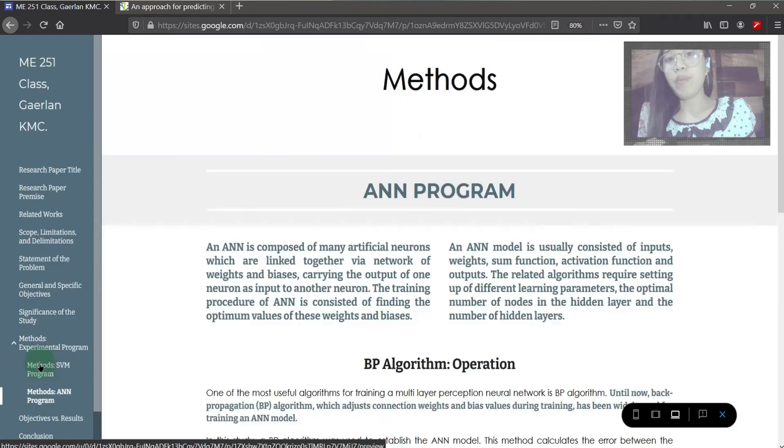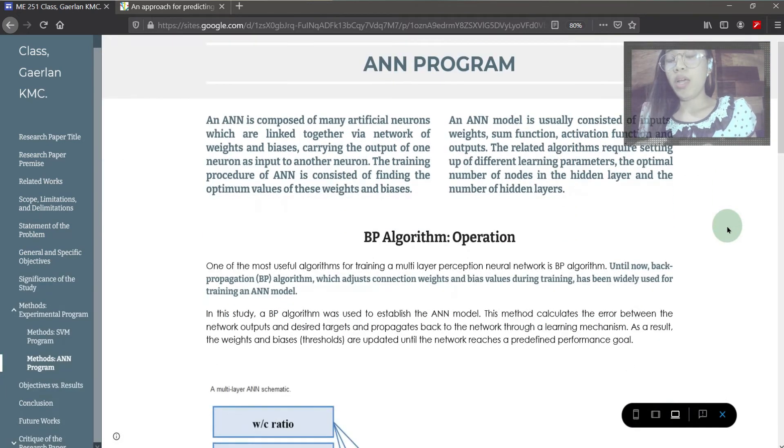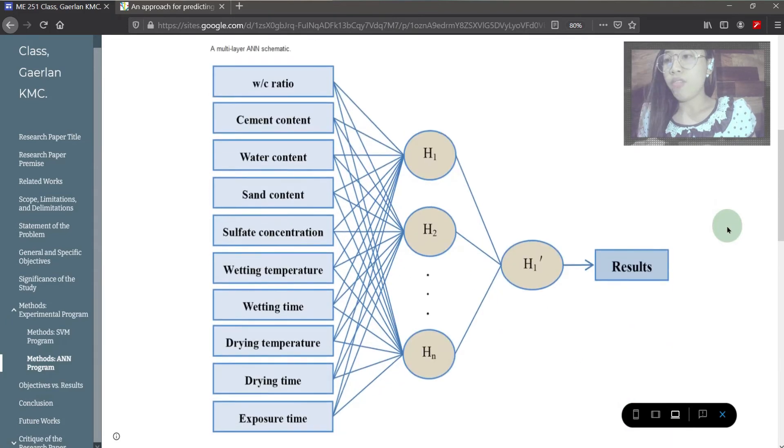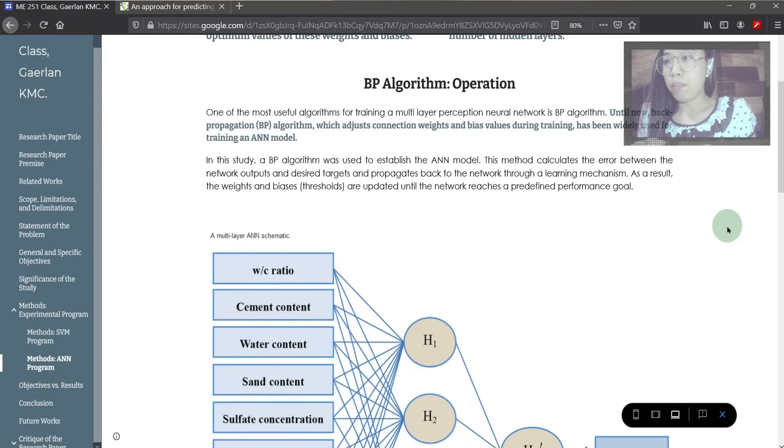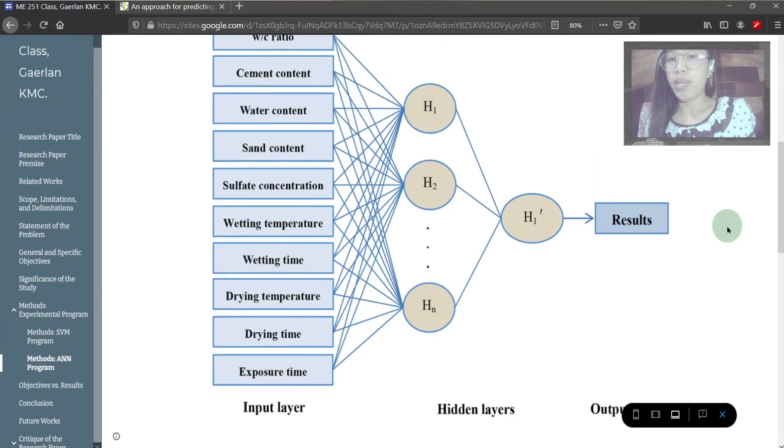Comparing SVM approach to ANN or artificial neural network, ANN composed of many artificial neurons which are linked together by a network of weights and biases, carrying the output of one neuron as input to another neuron. This usually consisted of inputs, weights, sum function, activation function, and outputs. To adjust connection weights and bias values, BP algorithm or back propagation was used. This is known and widely used for training ANN model.